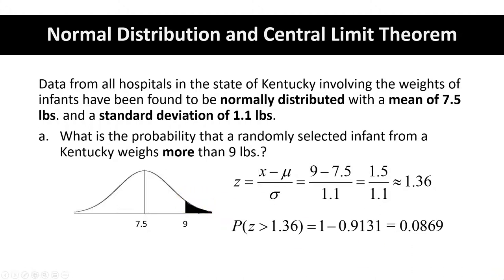So the probability that a randomly selected infant weighs more than nine pounds is a little bit less than nine percent, 0.0869. That probability matches our picture — it should be less than 50% and it is.